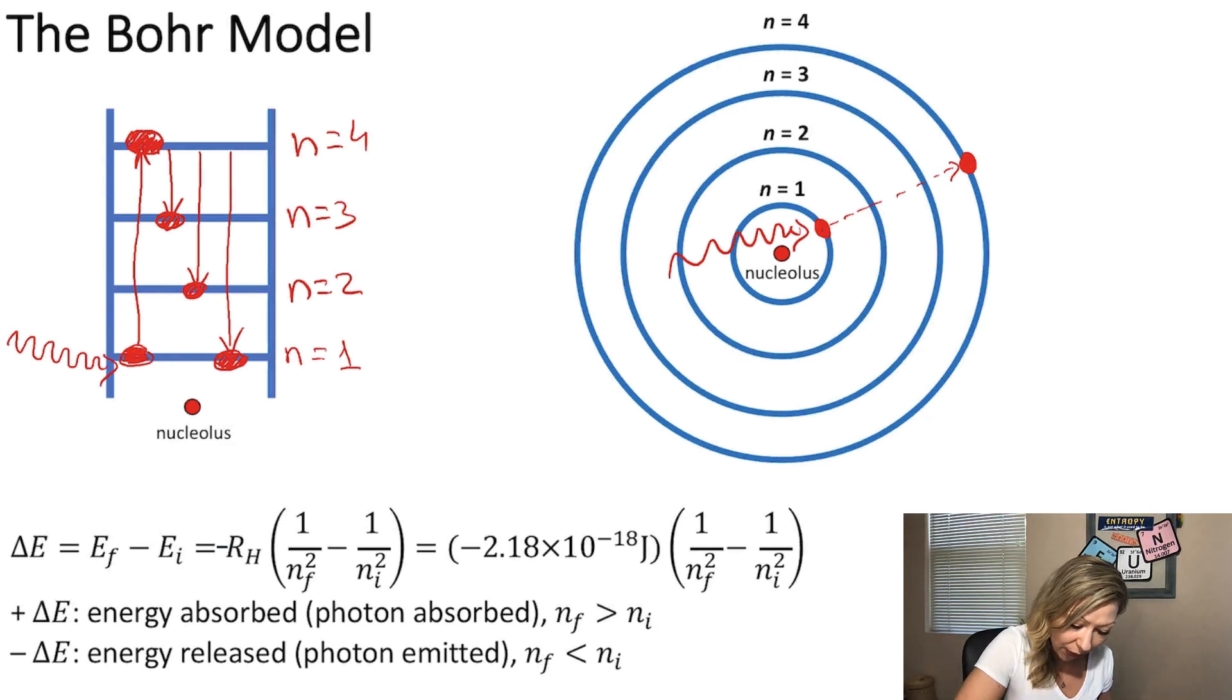So when we go from N equals 4 to N equals 3, we will emit a photon. When we go from 4 to 2, we will emit a photon. But you can see that actually the energy gap is higher. So it's going to be at a different spot on an electromagnetic spectrum, creating a line spectrum.